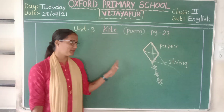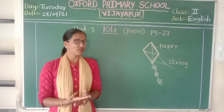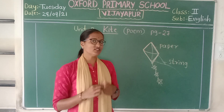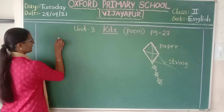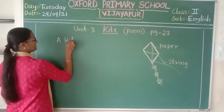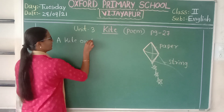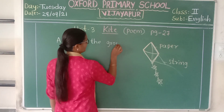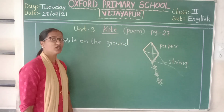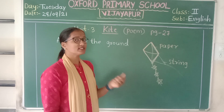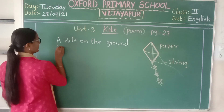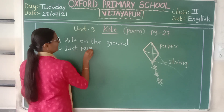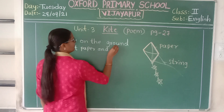We play with the kite using paper and string. Let us write the poem now. A kite on the ground — write the poem along with me. 'A kite on the ground is just paper and string.'